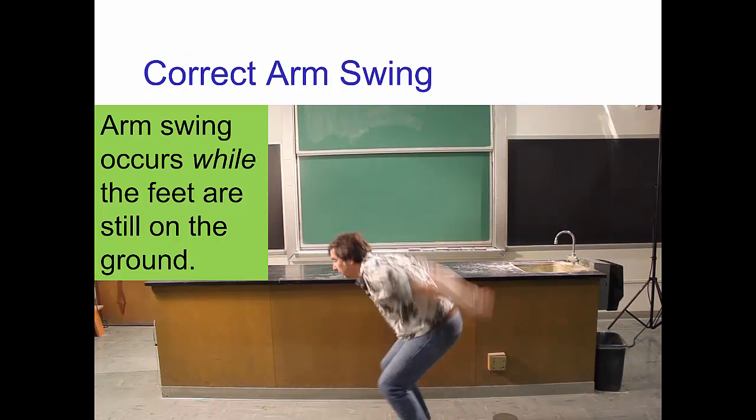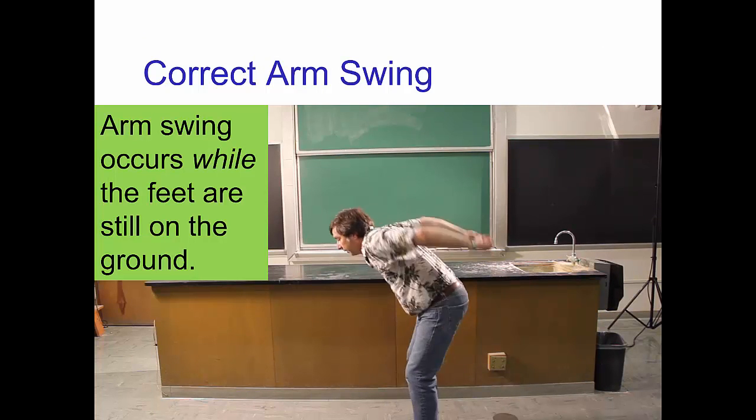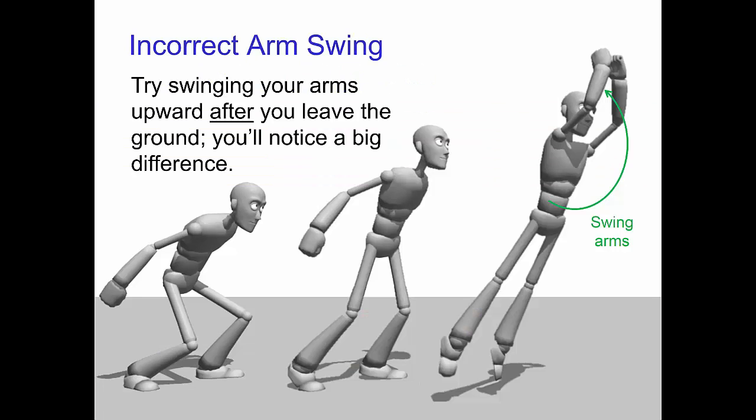This video shows the correct way to swing the arms in a jump. The incorrect way to animate the arm swing in a jump is to swing the arms after the character has already left the ground.